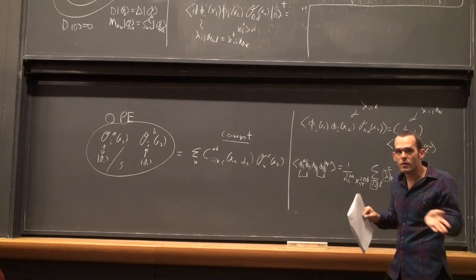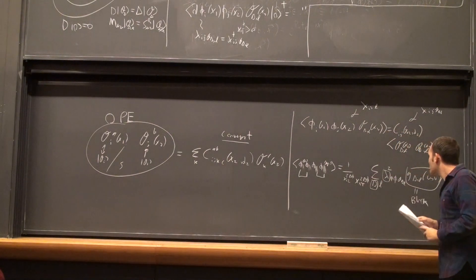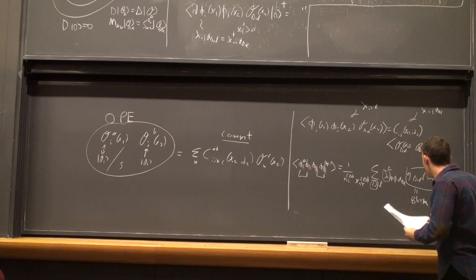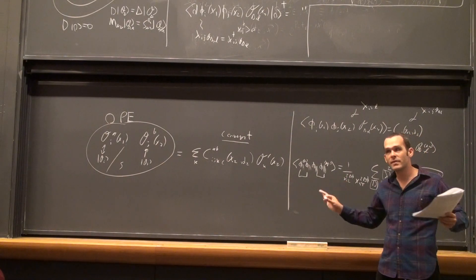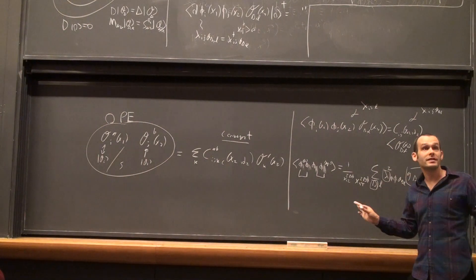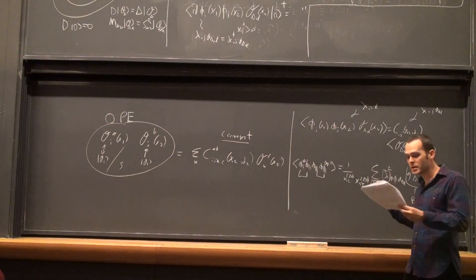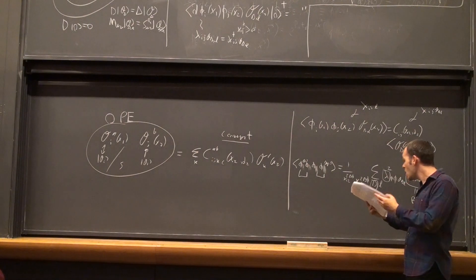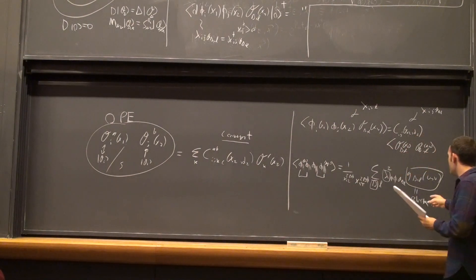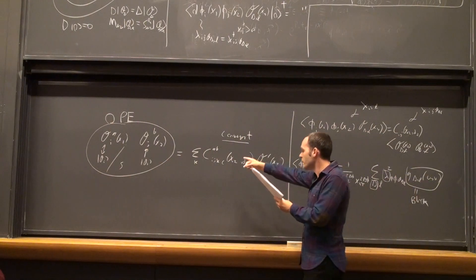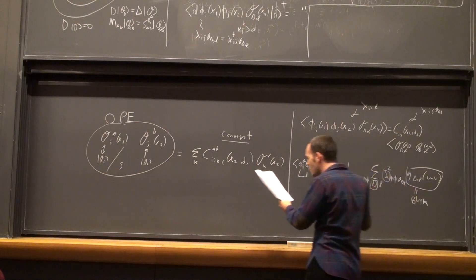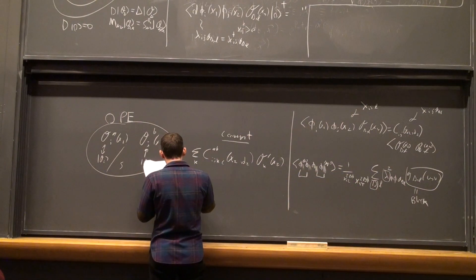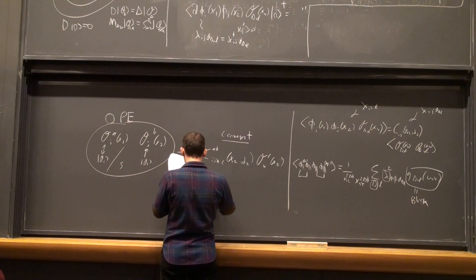Once we start the bootstrap algorithm, there's something special about just having the OPE coefficient squared. If you have OPE coefficient cubed or to the fourth power, you would have to think of some new algorithm. So let's give a definition of this block, which just follows from the definition of the OPE. We can just trace through the definition of this OPE, see exactly what happens when you take the OPE twice, and you will get your first definition of a conformal block, which is a rather hideous one. But I will write it out just to impress you with its hideousness.